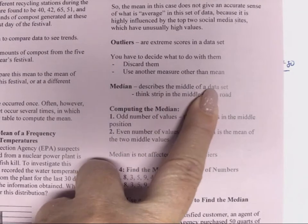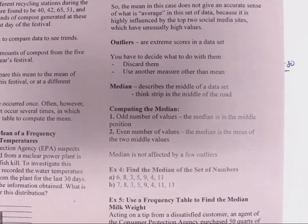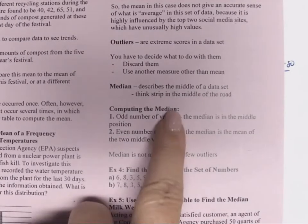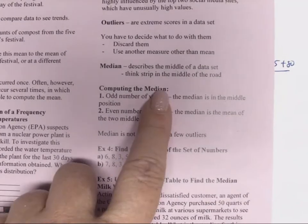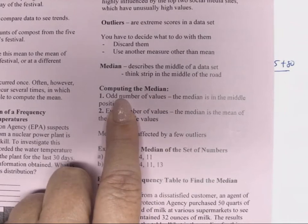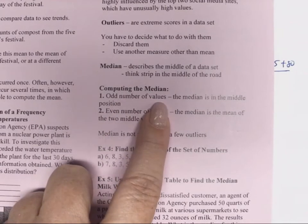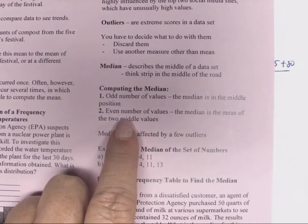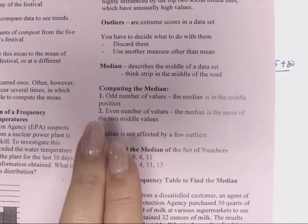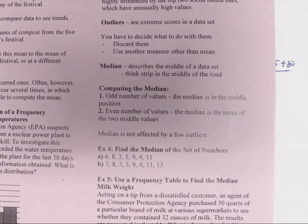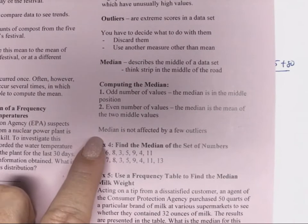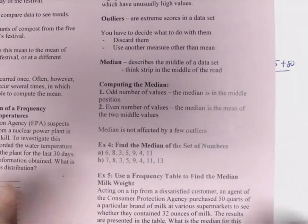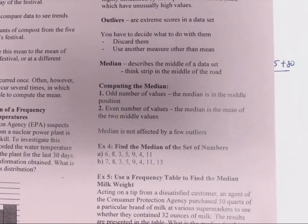The median describes the middle of a data set. Think about the strip in the middle of the road when you're driving. That's called the median. We're going to compute the median two ways. One would be the odd number of values, it'll just be the middle number. If it's an even number of values, you have to take the two middle numbers, add them, and then divide by two. The median won't be affected by a few outliers because they won't be in the middle of the main data set.